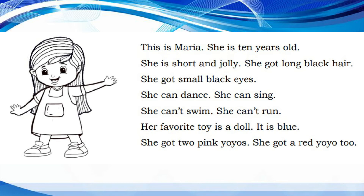This is Maria. She is 10 years old. She is short and jolly. She has long black hair. She has small black eyes. She can dance. She can sing. She can't swim. She can't run. Her favorite toy is a doll. It is blue. She has two pink yo-yos and a red yo-yo too.